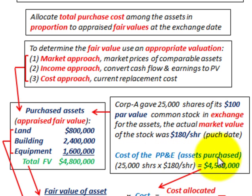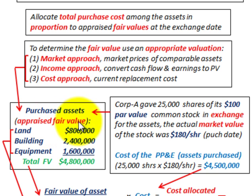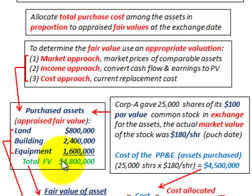The assets purchased would be 25,000 shares times the market value. We have an established market value on these shares at $180 each, so the total amount is $4,500,000. That's what they're going to pay for these assets. The appraised fair values are: land $800,000, building $2,400,000, and equipment $1,600,000. So the total appraised fair value of these assets — the basket purchase price — is $4,800,000.